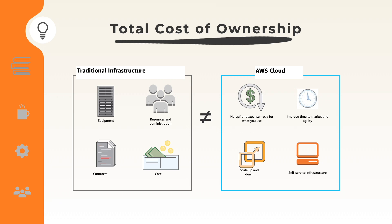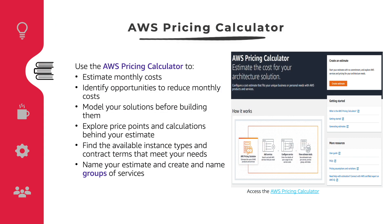You can use the AWS Pricing Calculator to estimate a monthly AWS bill for your infrastructure and to explore services and create an estimate. You can use this tool to find out in which region you should create an EC2 machine or an S3 bucket to get the lowest price among all AWS regions. You can model your solution before building it and explore price points and calculations — including available instance types and contract terms — that meet your needs.